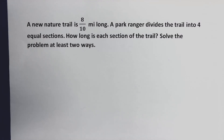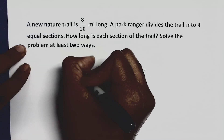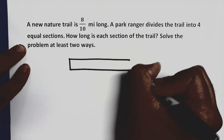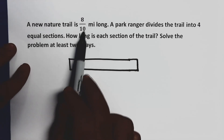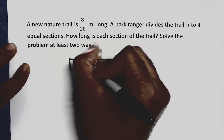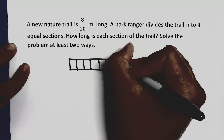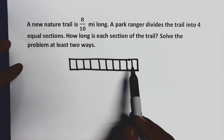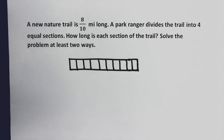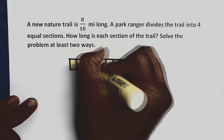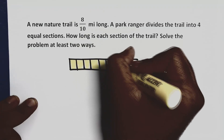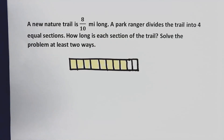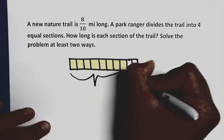Let's start by using a visual model — I'm going to use a fraction bar. Our models don't have to be perfect; they just help us see what the problem is asking. I'm going to break this up into ten pieces, one through ten, because I know tenths are involved. Now I'm going to shade eight-tenths of this. I'll shade one through eight. My shaded area represents the eight-tenths for the trail — each piece represents one-tenth.